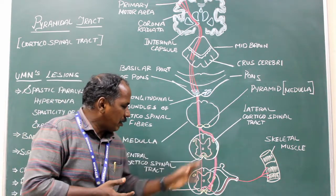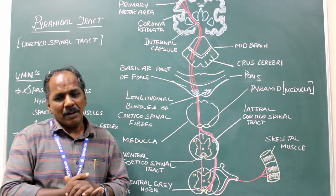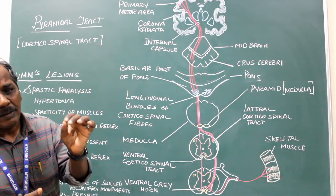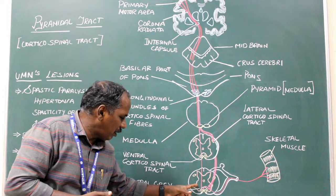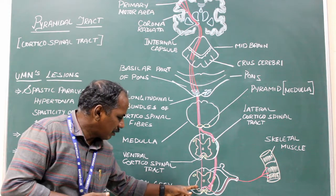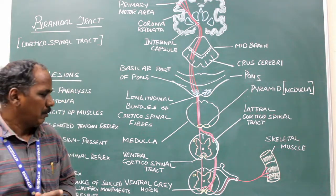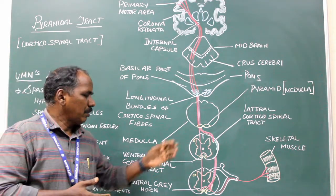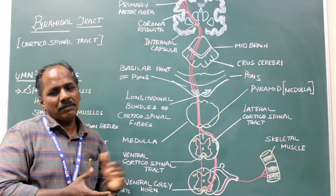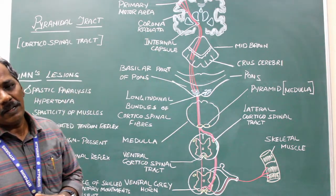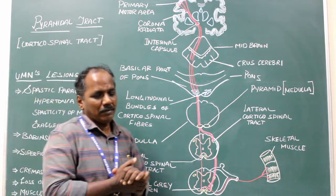The lateral corticospinal tract and ventral corticospinal tract fibers finally terminate by synapsing into the anterior horn cells present in the ventral grey matter of the spinal cord. This is the origin, course, and termination of the corticospinal tract — it is a motor pathway.